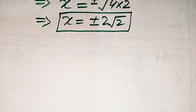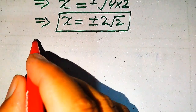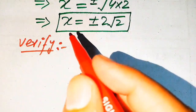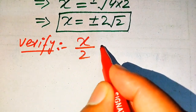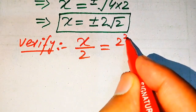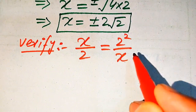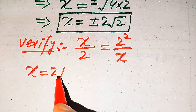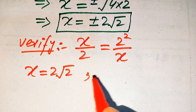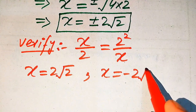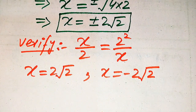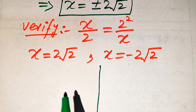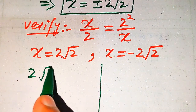Now we verify the roots and check whether both are solutions or extraneous roots. The given equation is x divided by 2 equals 2 squared divided by x. On one side we verify the positive root, 2 times square root of 2, and on the other side we verify the negative root, minus 2 times square root of 2.